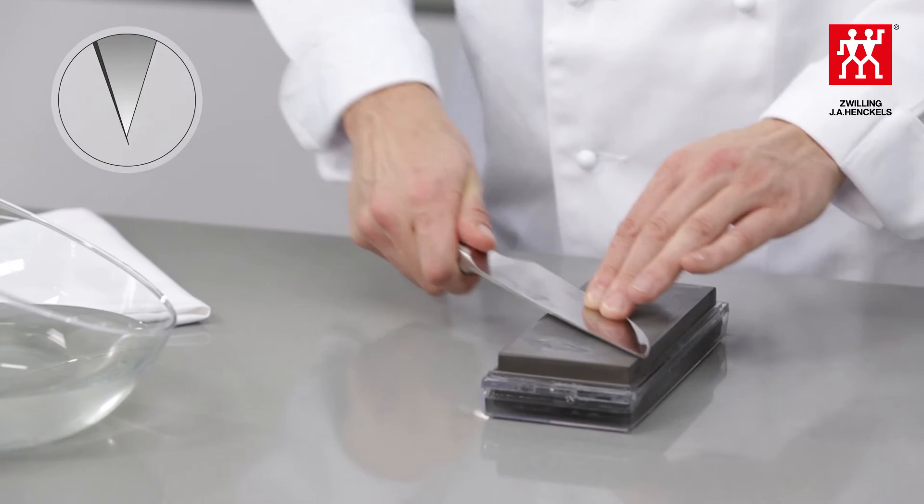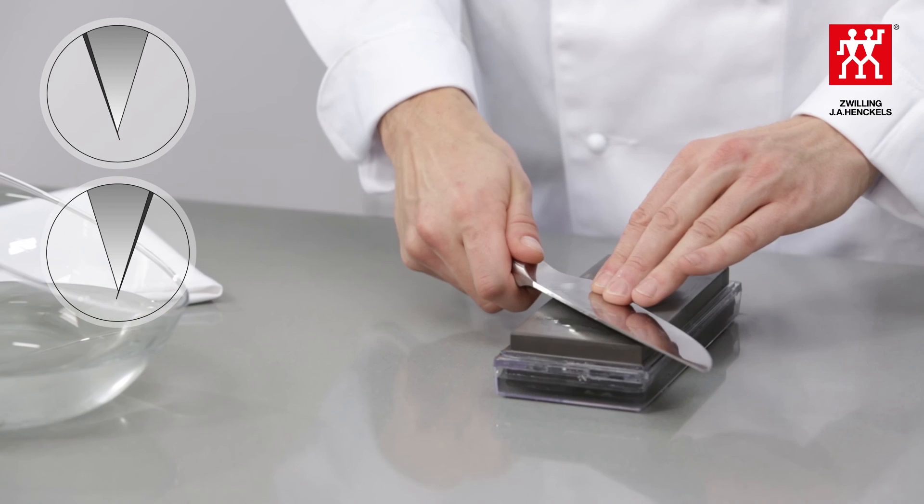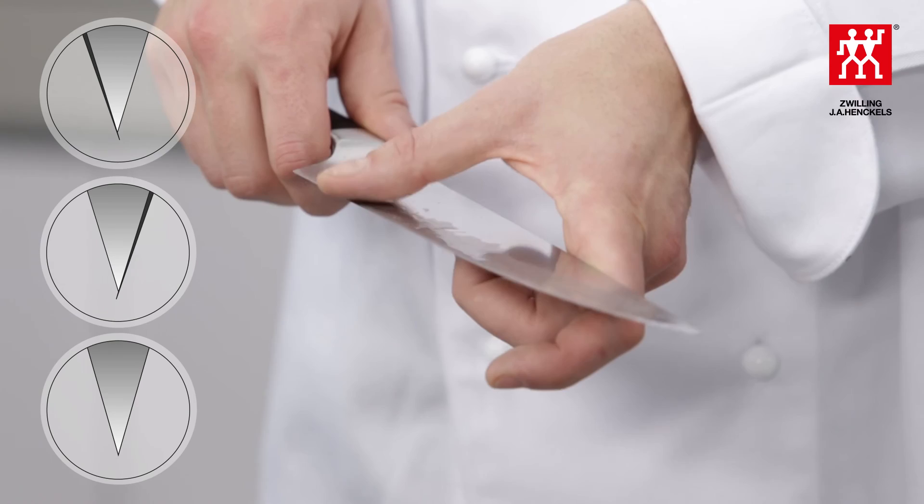To finally remove this burr, draw both sides of the blade in turn in an arc over the stone at the same time as exerting moderate pressure. End the process when you can no longer feel a burr on either side.